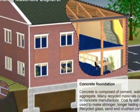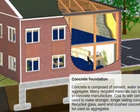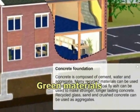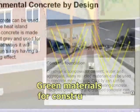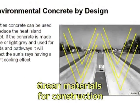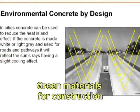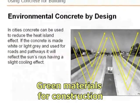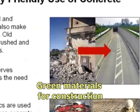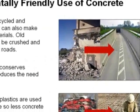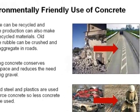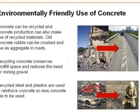Other activities in the module require students to evaluate environmental characteristics of materials used in construction. They identify some examples of sustainable and recycled materials and how these are incorporated in modern construction.